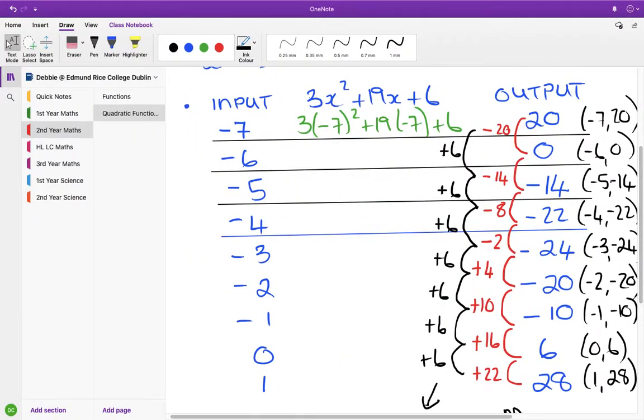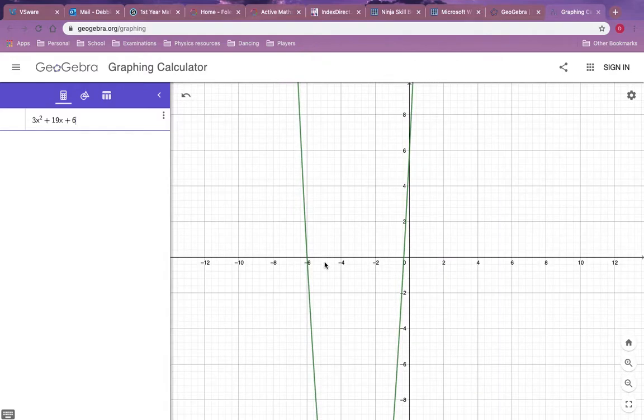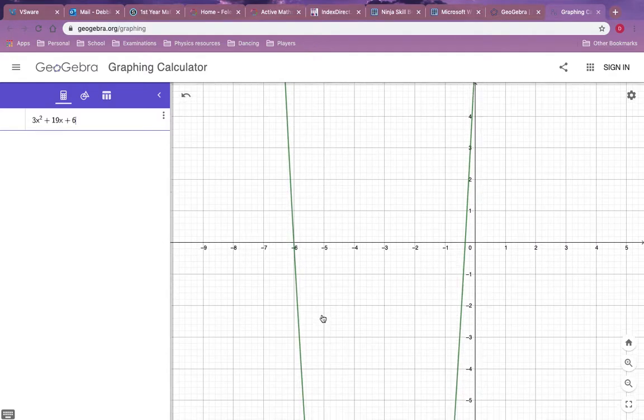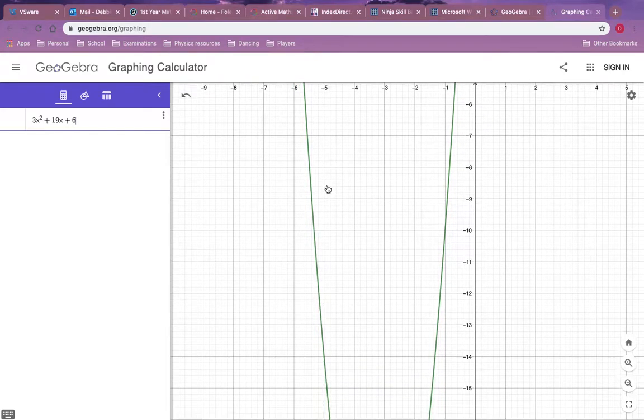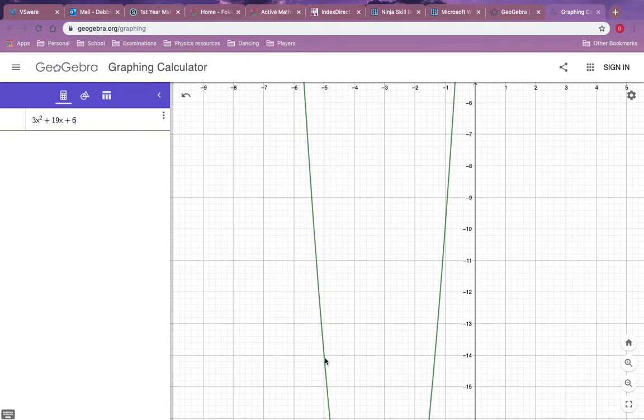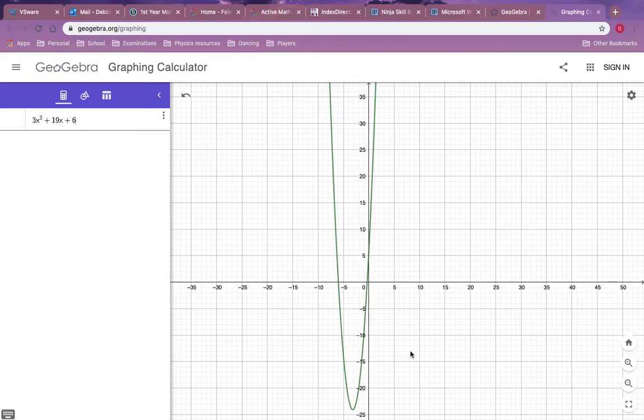The third one, then, is minus 5, minus 14. So here's minus 5, and we'll just follow that line down. There it is there. Minus 5, minus 14. So if you plot all the points, there's the shape of the graph. So the shape of that graph is U-shaped, which makes it quadratic.